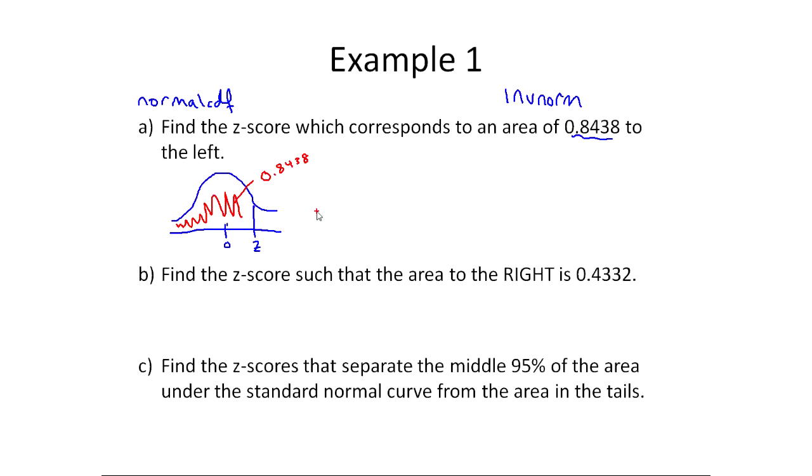What inverse normal does is it takes an area, and it only works with area to the left. It takes an area to the left and gives you the z-score. So in this case, this would be inverse norm of 0.8438, nothing else.